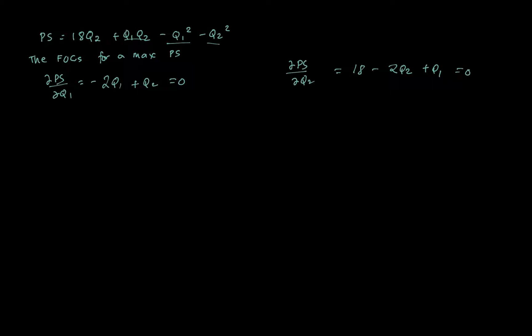We can now solve for the unknowns simultaneously. Using elimination or substitution on those two first-order conditions, we get Q1 = 6 and Q2 = 12. Those are the optimal quantities for the two blocks.